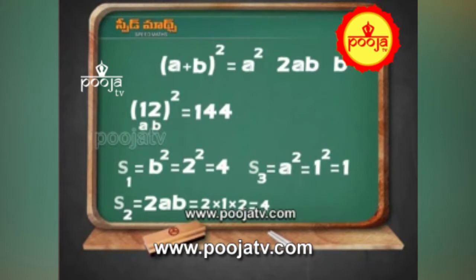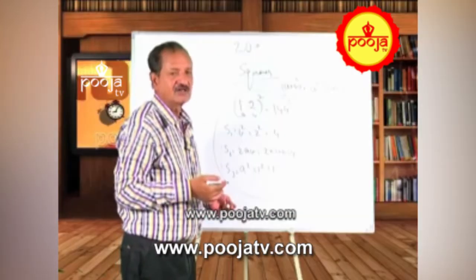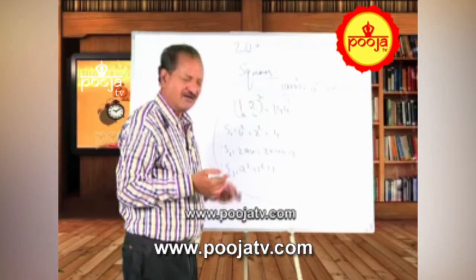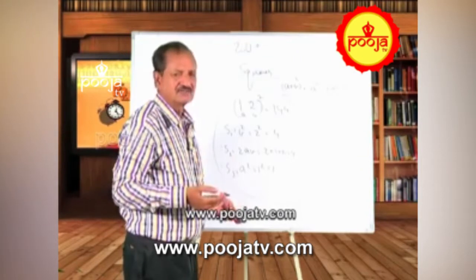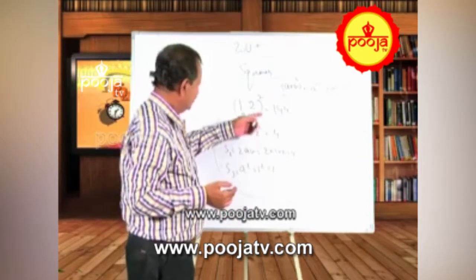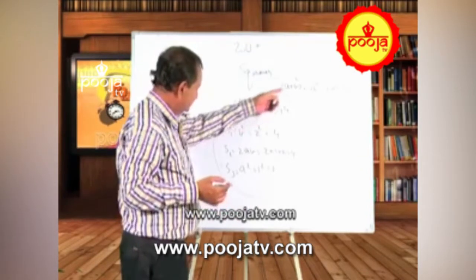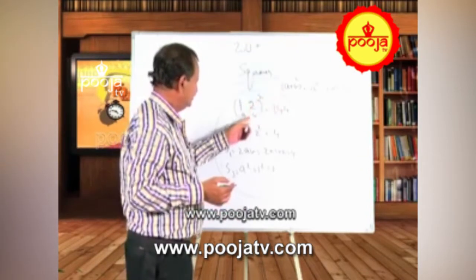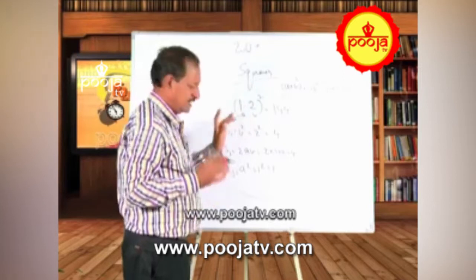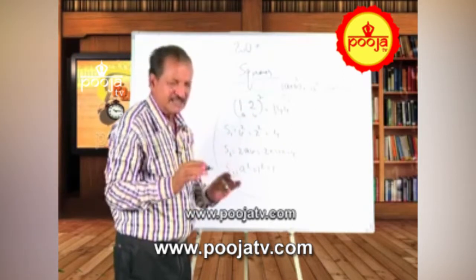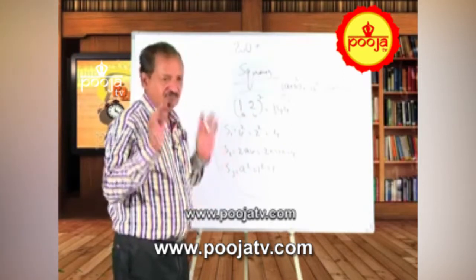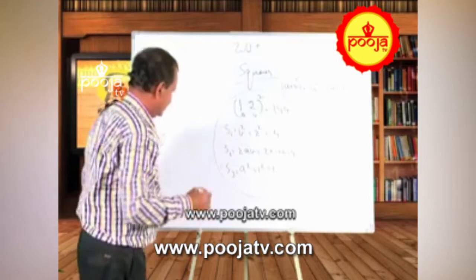Now, who invented this formula — Indians or foreigners? Everything was invented by us only. So using this formula, you have seen how it works. And like that, you can find the square of any number in a few seconds.